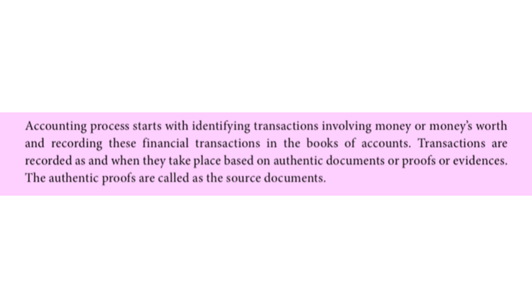Accounting process starts with identifying transactions involving money or money's worth and recording these financial transactions in the books of accounts. Transactions are recorded when they take place based on authentic documents or proofs or evidences. The authentic proofs are called source documents. The accounting process starts with identifying and recording financial transactions in the books.